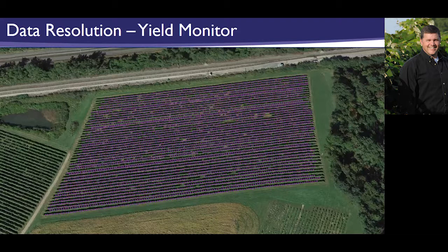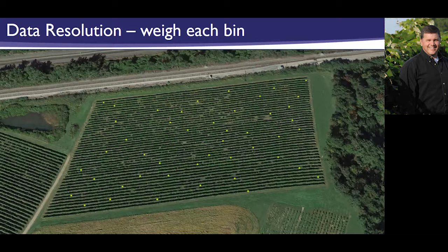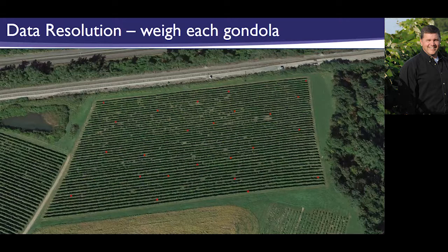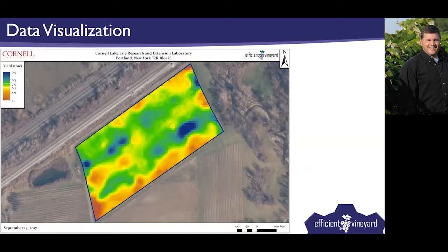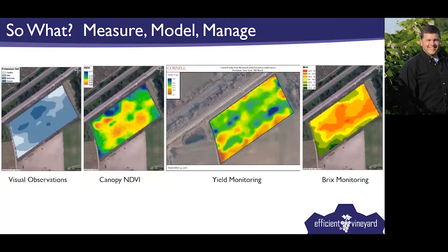One big advantage of using a yield monitor is getting a high-resolution, very dense data set to visualize your spatial yield map. Through spatial data processing — using smoothing techniques — you can find the real pattern in the vineyard. If you're just collecting bin weights without a yield monitor your resolution is lower, and if you're using a gondola holding several tons you'll get even lower resolution, making it tougher to generate a good yield map.